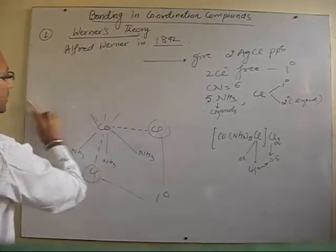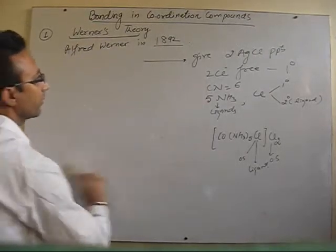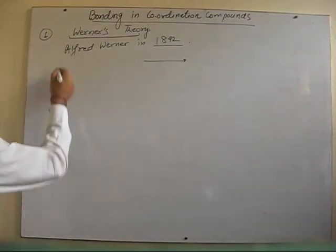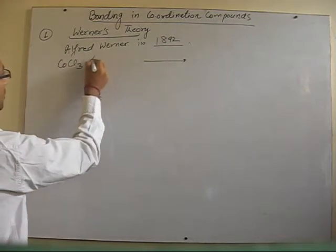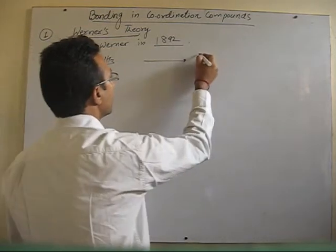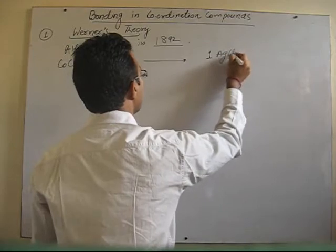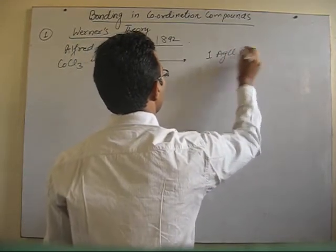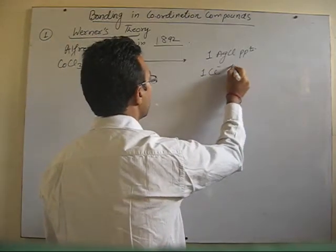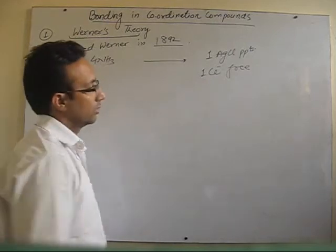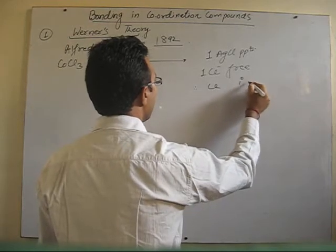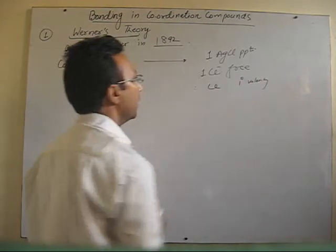Now let's take the third example. Here, the ammonia content is further reduced. This complex gives one AgCl precipitate in water. This shows that there is only one Cl which is free in water. Therefore, one Cl will satisfy primary valency, because it is the only ionizable one.